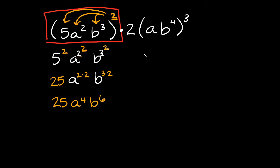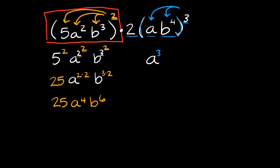Now let's simplify the right side. Again, you're going to take this exponent and essentially distribute it to everything inside of the parentheses — to the a and to the b to the 4th. You're not going to distribute it to the 2 out here because the 2 is not inside the parentheses. So simplifying, we're going to have a raised to the third power, and then b raised to the fourth power raised to the third power. That 2 out here we just bring straight down, giving us 2 a cubed and then b to the fourth to the third.